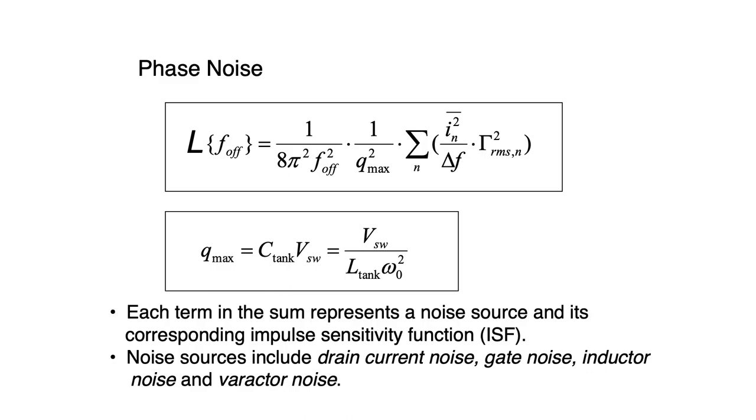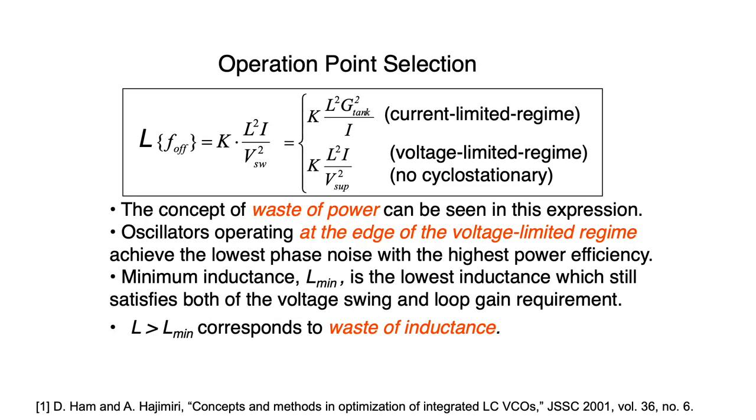There are various noise sources that contribute total noise. There are two different regions of operation. If you look at that expression for phase noise and simplify it and absorb all the things that we don't care about in this calculation, you will see that you get an expression like K L squared I over V_swing squared. If you evaluate this in the current-limited regime where V_swing is proportional to I_tank, what happens is that you get an expression that's inversely proportional to the I, the bias current. So you get K L squared G_tank squared divided by I.